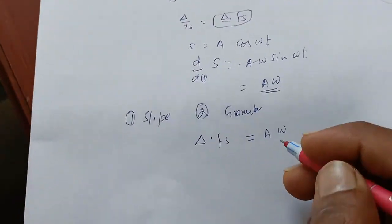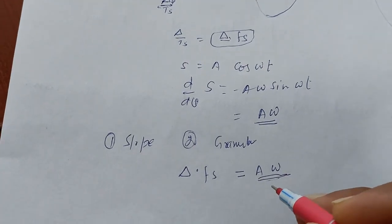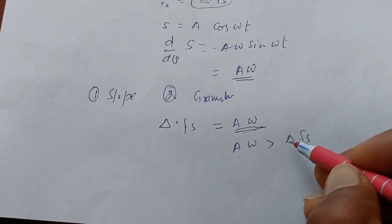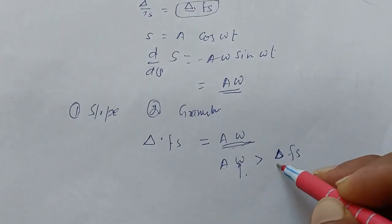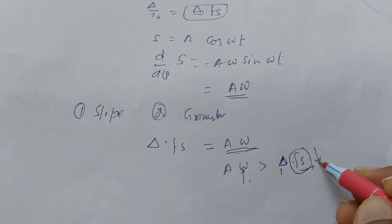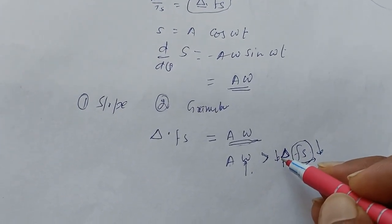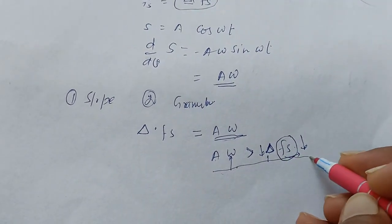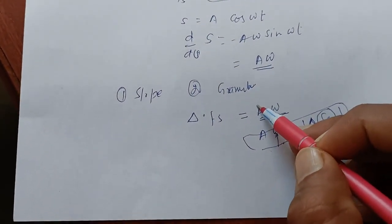For slope overload error, A·ω is greater than delta·Fs. You can change the message frequency, the amplitude of the message, the step size, or the sampling frequency. If you decrease the sampling frequency or decrease delta, there will be slope overload error. By changing these four variables you can get either slope overload error or granular error. If the equality holds, that will be perfect delta modulation.